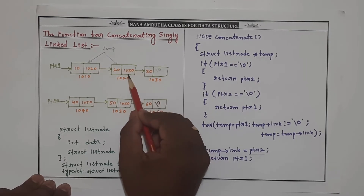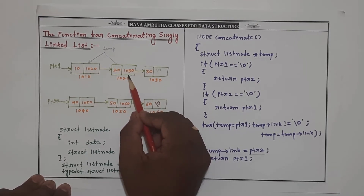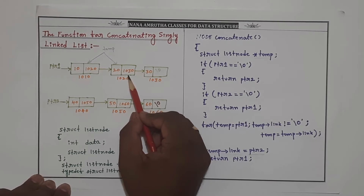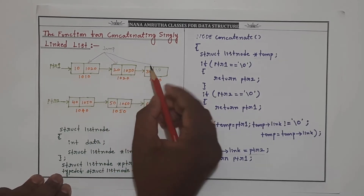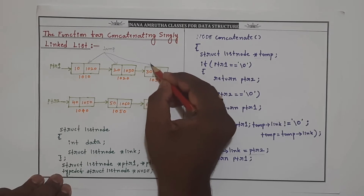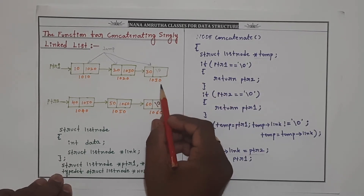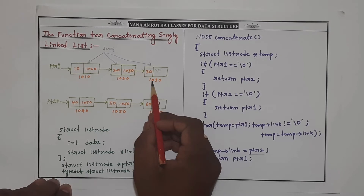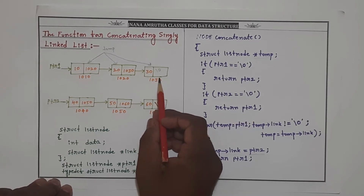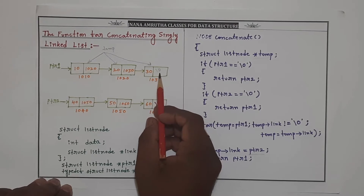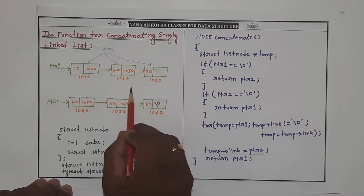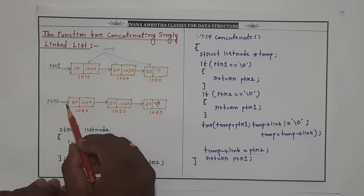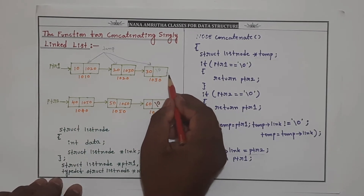Again we check whether temp of link is not equal to null — yes, it is not null. So we move temp equal to temp of link. Now temp is pointing to node at address 1030. We check again whether temp of link is not equal to null — now the condition becomes false. Once it reaches the null condition, we establish a new connection: temp of link equal to PTR2.